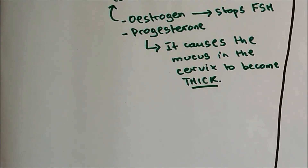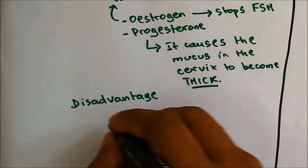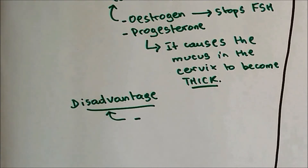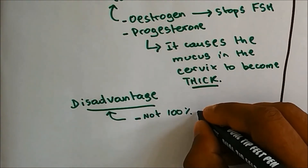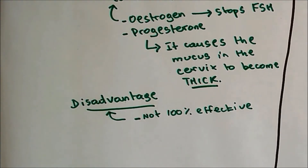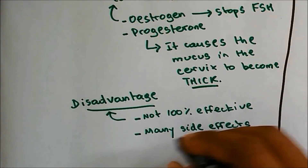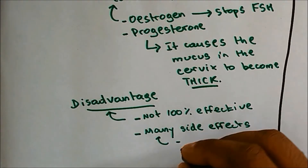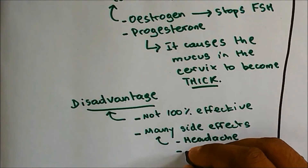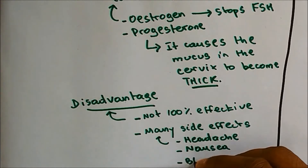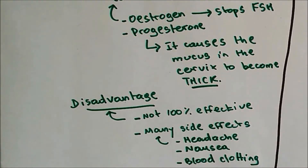Let's take a look at the disadvantages of contraceptive pills. These pills are not 100% effective, so there's still a chance for the woman to become pregnant. Combined oral contraceptive pills also have many side effects, examples being headache, nausea, and blood clotting — which happens internally in the blood vessel, which is harmful.